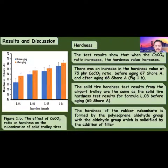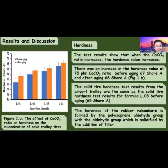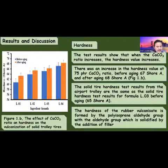Figure 1B shows the effect of calcium carbonate ratio on the hardness of solid tires. The test results show that when the calcium carbonate ratio increases, the hardness value increases, reaching up to 75 Shore A. The hardness results for formula L03 before aging are 65 Shore A. The solid tire hardness test results from the airport trolley match those of existing solid tires. The hardness of the rubber vulcanizate is formed by the isoprene chains and the aldehyde groups, which are solidified by the addition of filler.